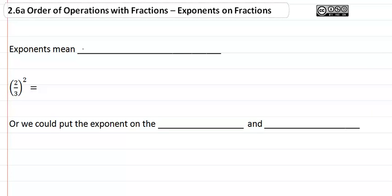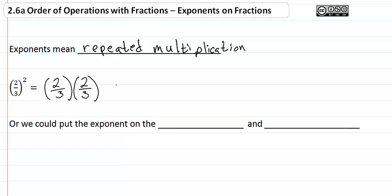Exponents mean repeated multiplication. Two-thirds squared equals two-thirds times two-thirds, which would give us four-ninths.